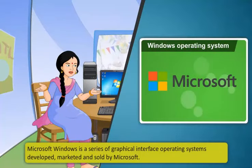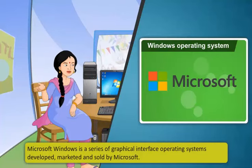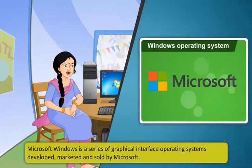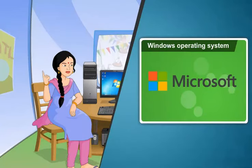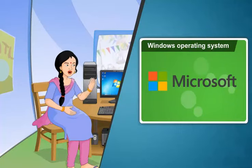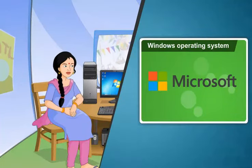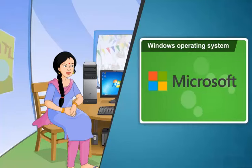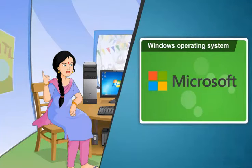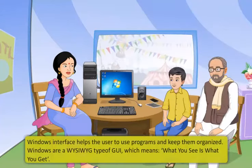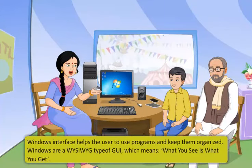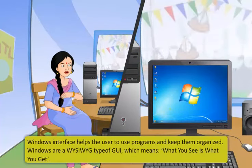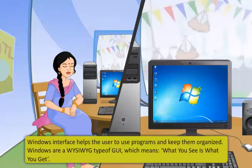Let's learn about Microsoft Windows, which is one of the most popular operating systems. Microsoft Windows is a series of graphical interface operating systems developed, marketed, and sold by Microsoft. Most computers come with a pre-installed Microsoft Windows operating system. If you have a computer without Windows, you can buy a licensed copy from an authentic seller or download it from Microsoft's website.